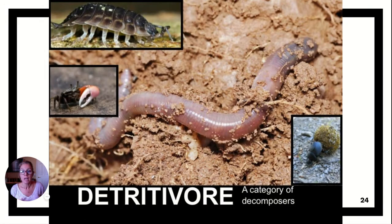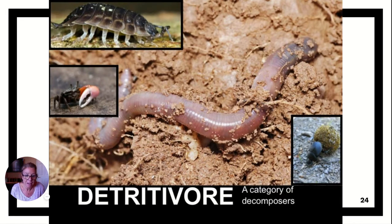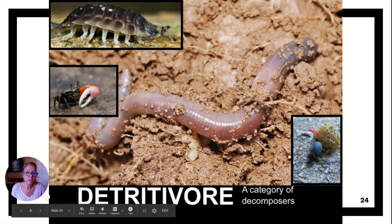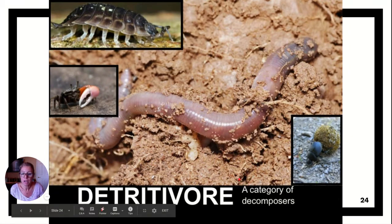Detritivores are a subcategory of decomposers, and they eat decomposing material called detritus. This detritus could be waste or material at the bottom of a cave. Here you can see a dung beetle. They can be bacteria, worms, or crabs — they break down those nitrogenous decomposing wastes.